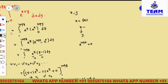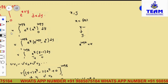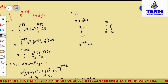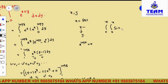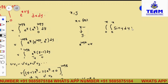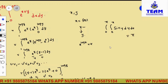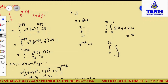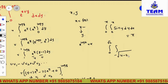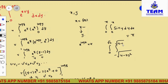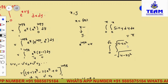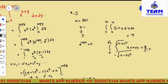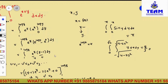Practice problem 1: integral from 0 to pi, integral from 0 to x, of sin y dy dx. The answer is pi. Practice problem 2: integral from 0 to root 2, integral from y to the square root of (4 minus 2y squared), of xy dx dy. The answer is 8 by 3. Try to solve these problems and watch the next video if needed. Thank you for watching.